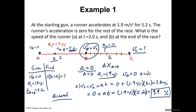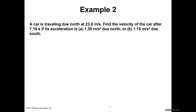This problem shows that if you reach a certain speed and then stop accelerating, you maintain that speed all the way to the end. Let's look at another example. A car is traveling due north at 23.6 meters per second. Find the velocity after 7.1 seconds if its acceleration is 1.3 meters per second squared due north.